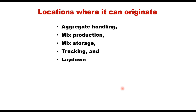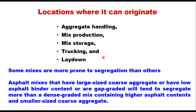There are four or five locations where segregation can originate: aggregate handling, mix production, mix storage, trucking, and lay down. Some mixes are more prone to segregation than others. Asphalt mixes that have large size coarse aggregate, or have low asphalt binder content, or are gap graded will tend to segregate more than a dense graded mix containing high asphalt content and smaller size coarse aggregate.